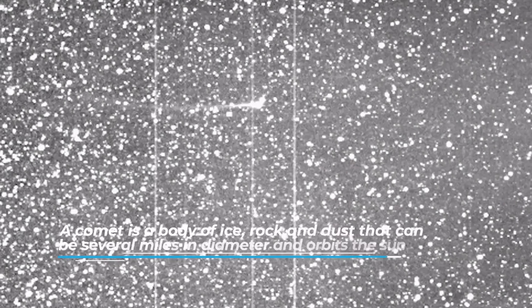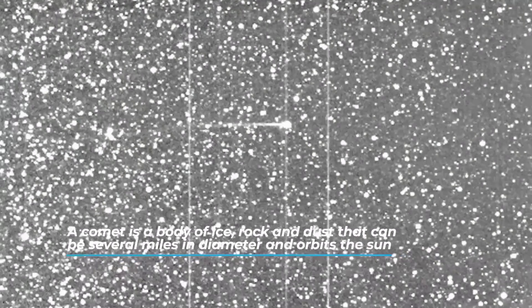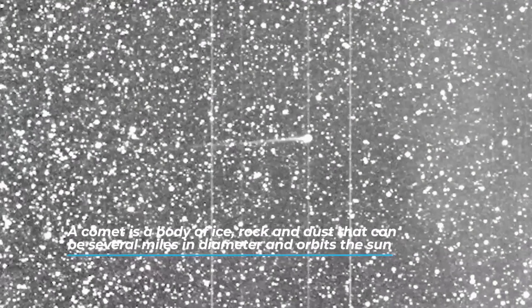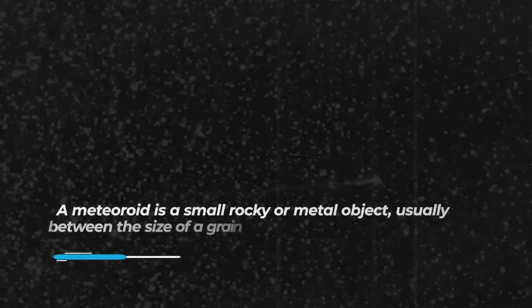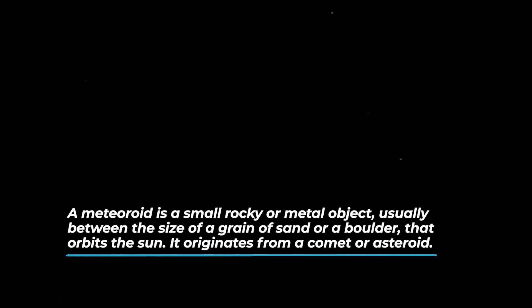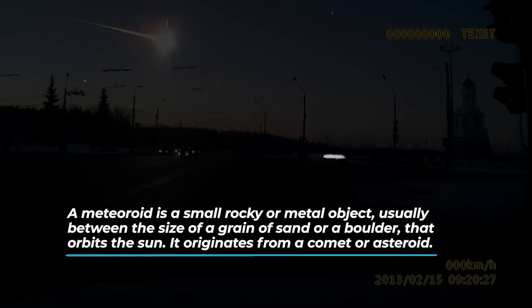A comet is a body of ice, rock, and dust that can be several miles in diameter and orbits the sun. Debris from comets is the source of many meteoroids. A meteoroid is a small rocky or metal object, usually between the size of a grain of sand or a boulder that orbits the sun. It originates from a comet or asteroid.